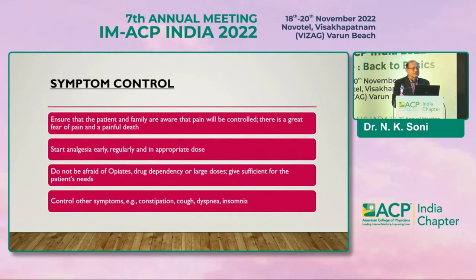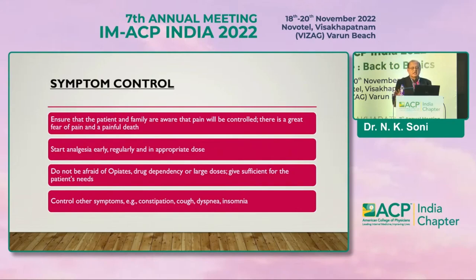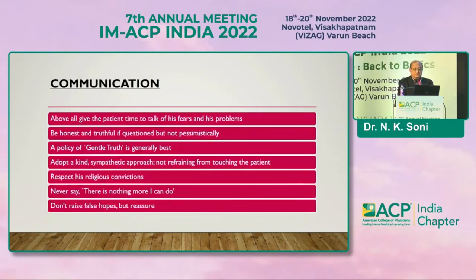As far as symptom control is concerned, ensure that the patient and family are aware that pain will be controlled — there is a great fear of painful death in the patient's and attendant's minds, so we should try to alleviate those fears. Start analgesia early, regularly, and in appropriate doses. Don't be afraid of using opiates. Control other symptoms like cough, dyspnea, sleeplessness, and constipation — these are common symptoms terminally ill patients encounter.